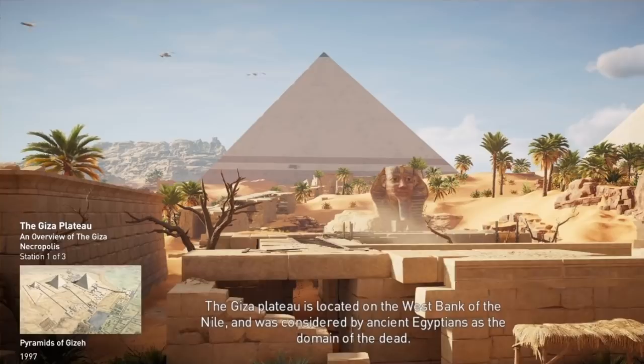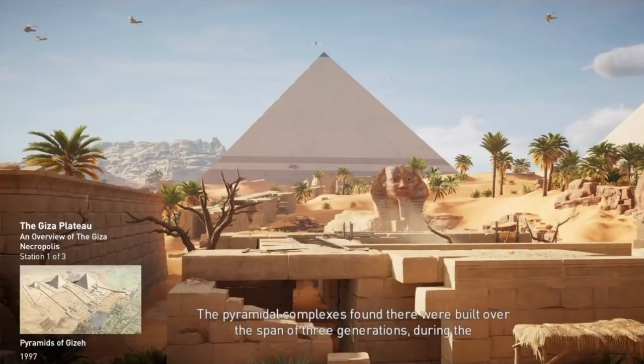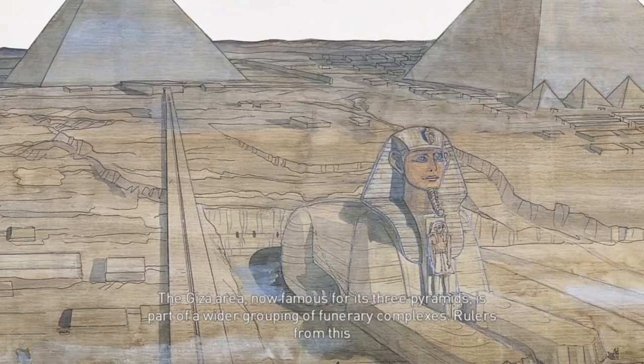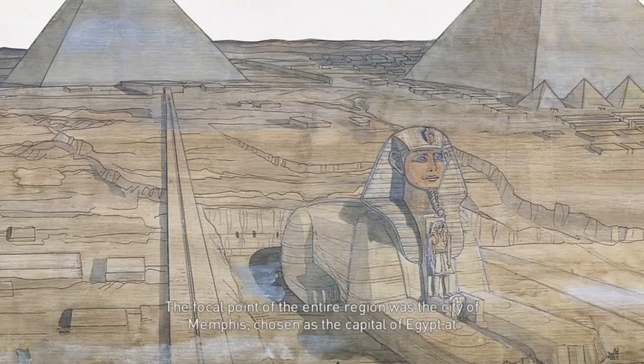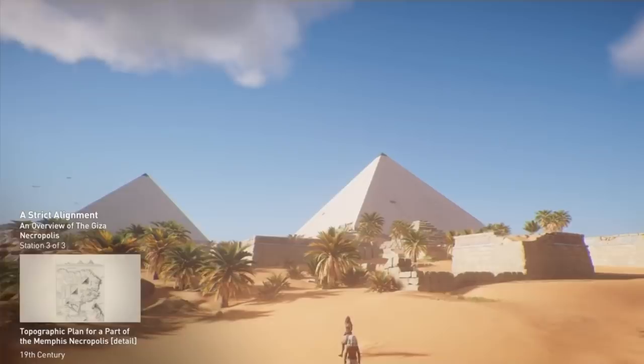The Giza Plateau is located on the west bank of the Nile and was considered by ancient Egyptians as the domain of the dead. The pyramidal complexes found there were built over the span of three generations, during the reign of Khufu, Khafre, and Menkaure. The Giza area, now famous for its three pyramids, is part of a wider grouping of funerary complexes. Rulers from this period generally elected to be buried in the area. The focal point of the entire region was the city of Memphis, chosen as the capital of Egypt at the beginning of the Old Kingdom.